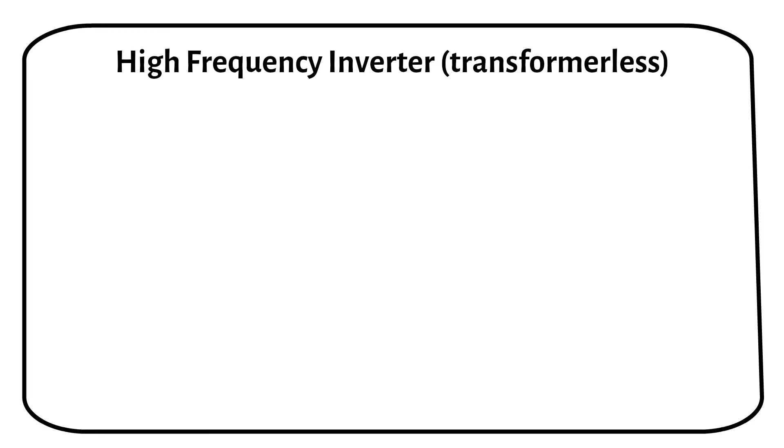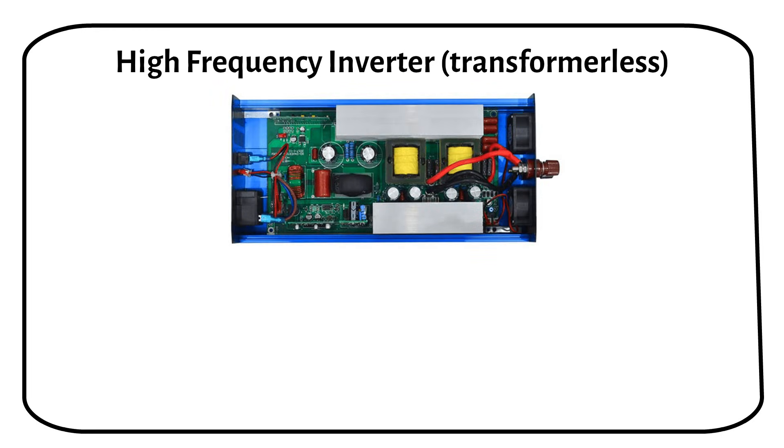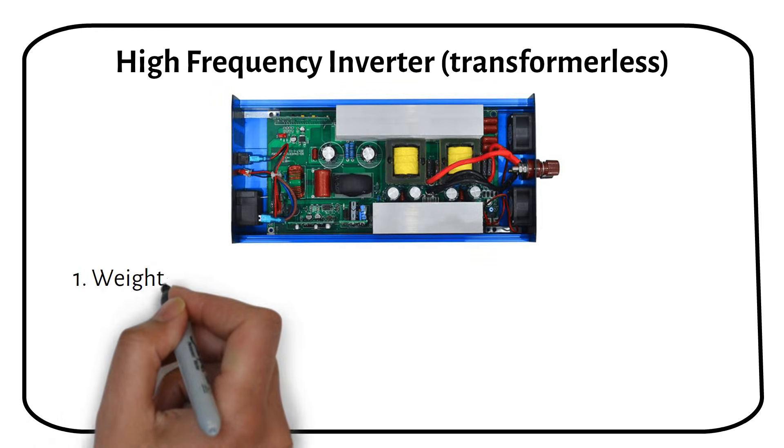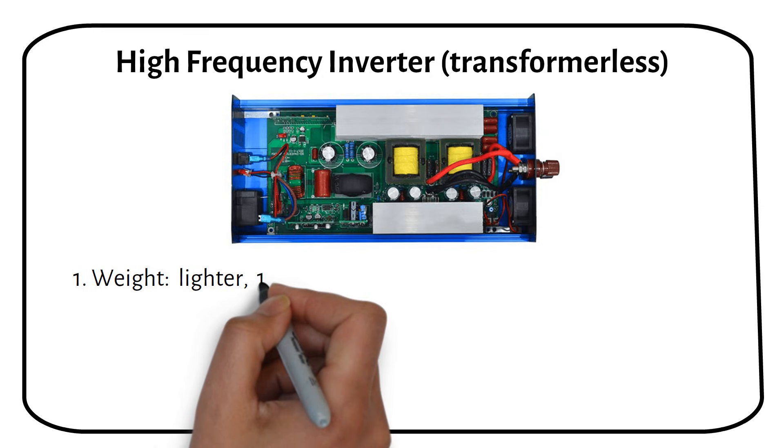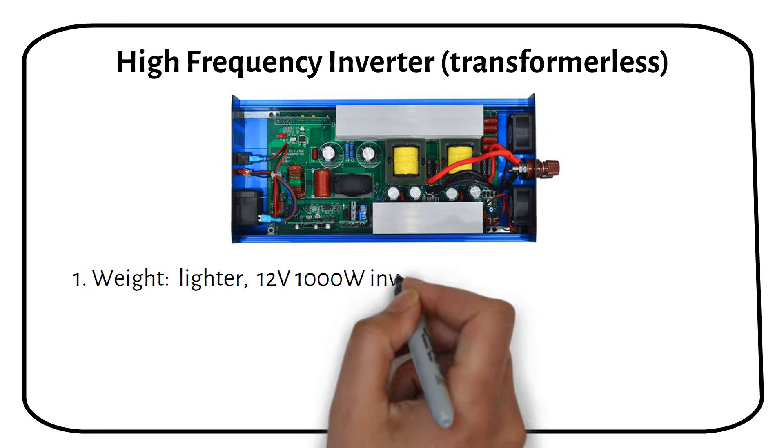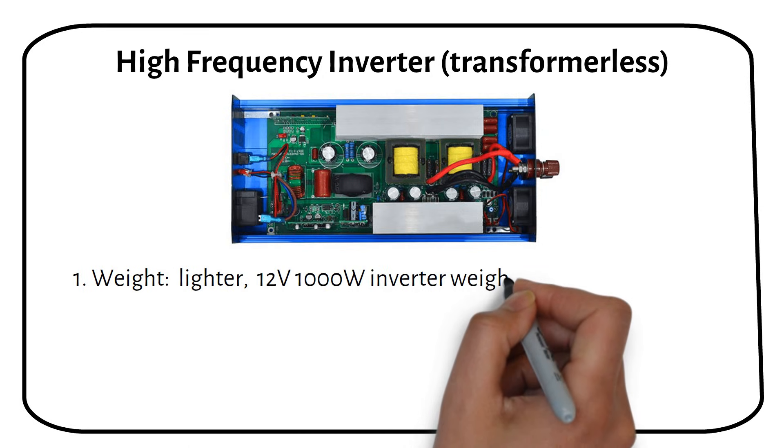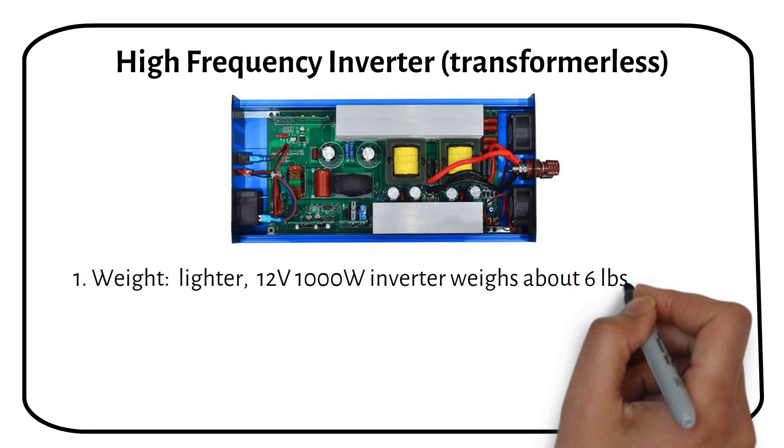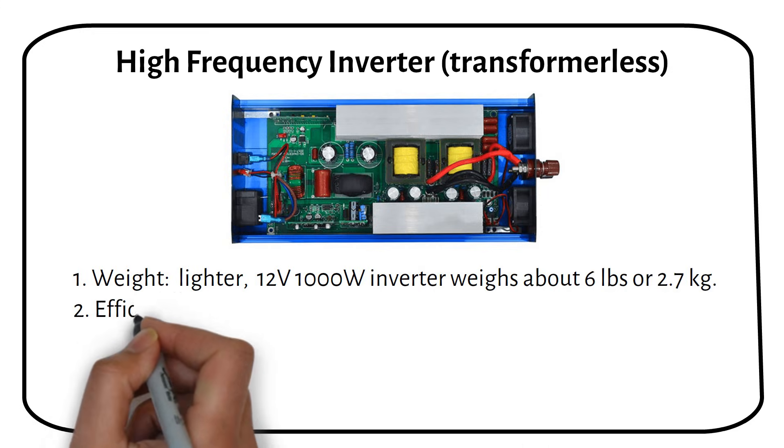Let's talk about high frequency inverters. High frequency inverters are lighter, because they don't use a big transformer. For example, a high frequency 12 volt 1000 watt inverter weighs about 6 pounds or 2.7 kilograms.